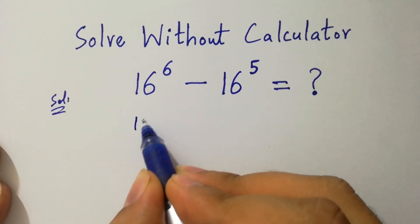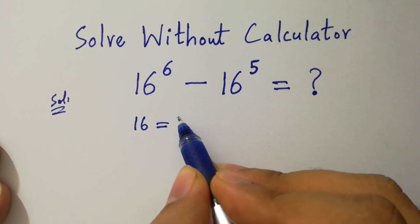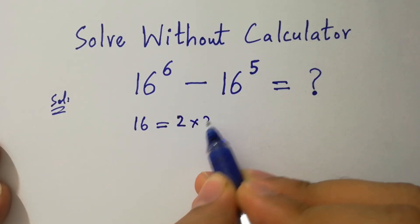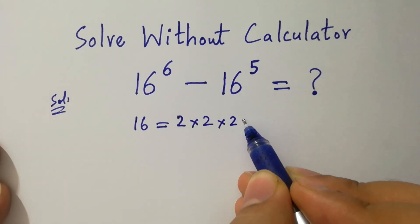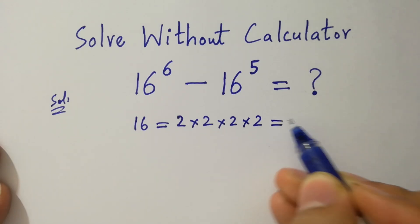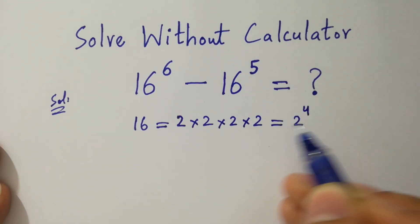Since 16 equals 2 times 2 is 4, 4 times 2 is 8, 8 times 2 is 16, therefore 16 equals 2 to the power 4.